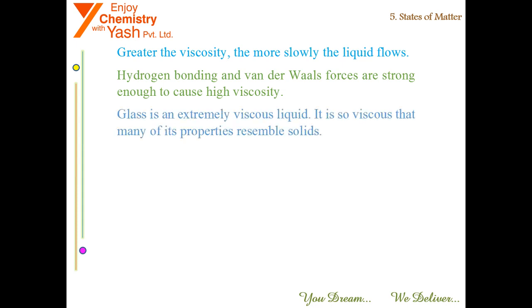Glass is an extremely viscous liquid. It is so viscous that many of its properties resemble solids. This can be observed in very old houses with glass window panes. At the bottom of these glass window panes, you can find the thickness of glass is a little more than at the top. This indicates that glass is a supercooled liquid which has a tendency of viscosity.